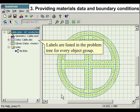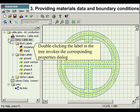Labels are listed in the problem tree for every object group. Double-clicking the label in the tree invokes the corresponding properties dialog.